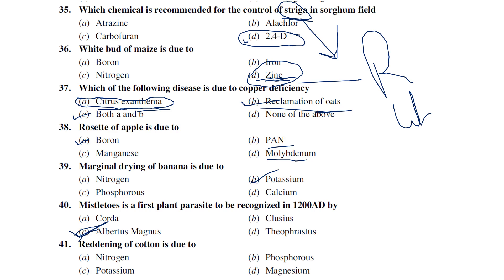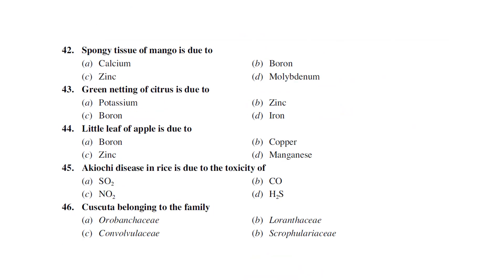Mistletoe has various other names mentioned in previously published videos on phanerogamic plant parasites. Reddening of cotton is due to magnesium deficiency — among nitrogen, phosphorus, potassium, and magnesium, the answer is magnesium.